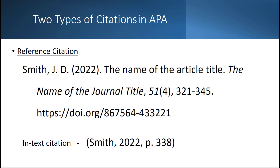Let me walk you through the different pieces. First we have the author's last name, comma, author's first initials. We only use first initials in APA to get rid of gender bias. Next comes the year in parentheses with a period at the end. We do not put the day or the month when citing a scholarly journal article. The title of the article is in sentence case, meaning the first word starts with a capital letter and the rest are lowercase unless they are a proper noun. This is in regular formatted text, nothing special, with a period at the end of the title.